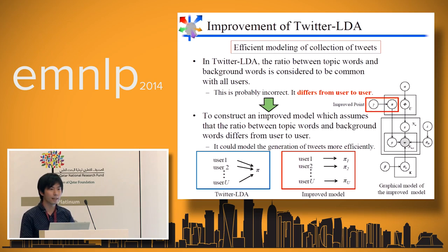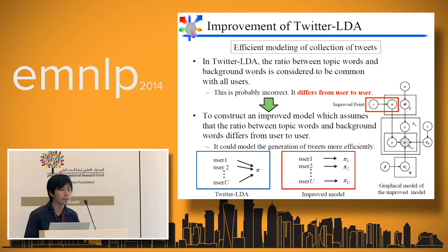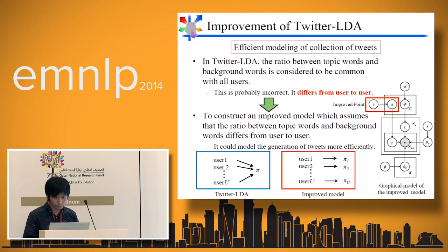First, I talk about the improvement of Twitter LDA. In Twitter LDA, the ratio between topic words and background words is considered to be common with all users. This is probably incorrect — it differs from user to user. So I construct an improved model which assumes that the ratio between topic words and background words differs from user to user. It could model the generation of tweets more efficiently.